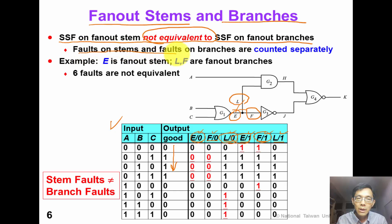Faults on fan-out stem and faults on fan-out branches should be counted separately. So for this example circuit, we should have 6 independent faults on this fan-out.